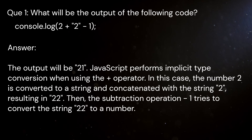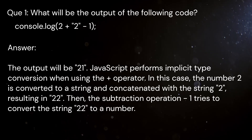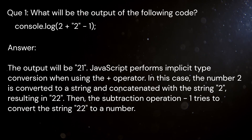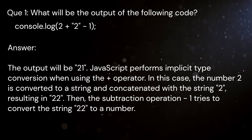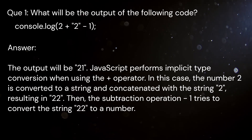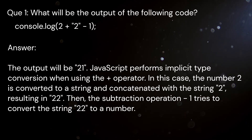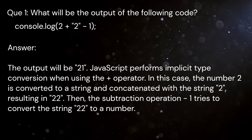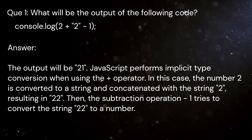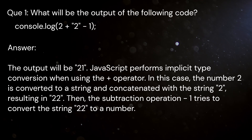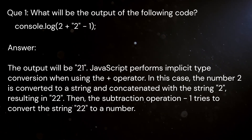Question 1: What will be the output of the following code? console.log(2 + '2' - 1). Answer: The output will be the number 21. JavaScript performs implicit type conversion when using the plus operator. In this case, the number 2 is converted to a string and concatenated with the string '2', resulting in '22'. Then the subtraction operation minus 1 tries to convert the string '22' to a number, resulting in the value 21.